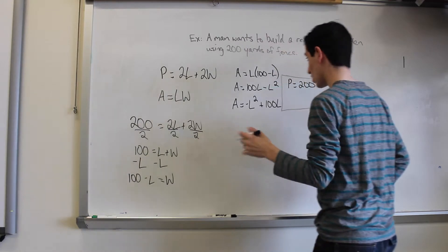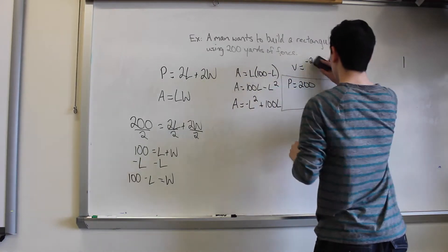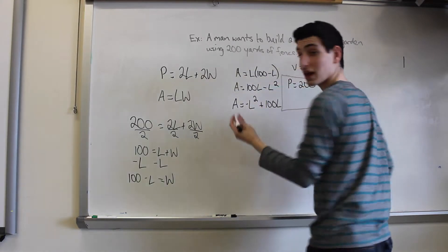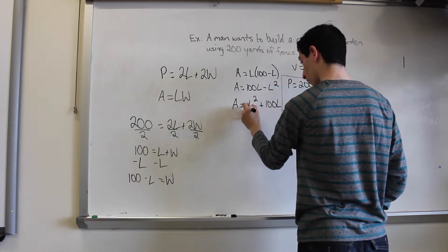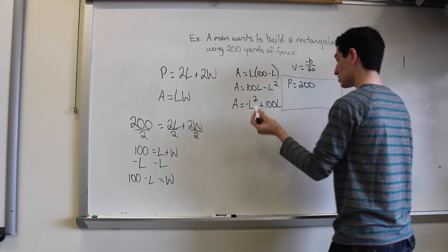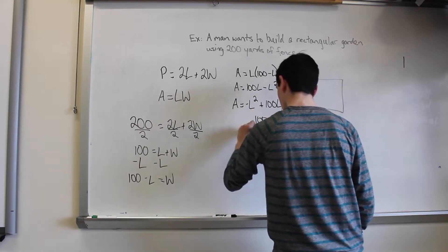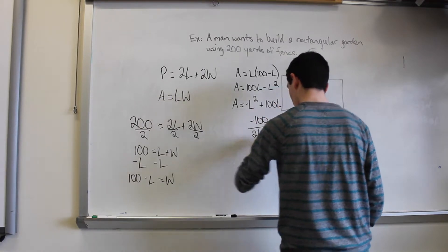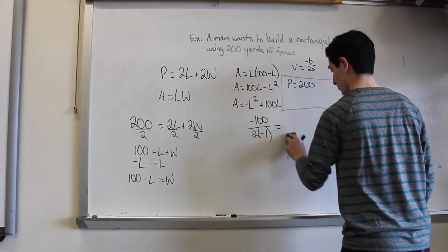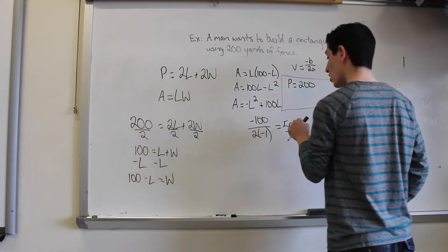Now if we take the vertex formula, which we know is vertex equals negative B over 2A, we know that according to the form our A is right before our x value, so we have that as negative 1, and we have our B which is 100. So we'll take it, make it negative 100 over 2 times negative 1, which simplifies to 50.